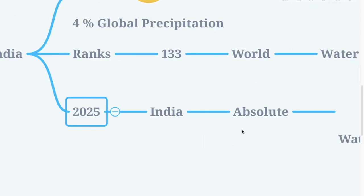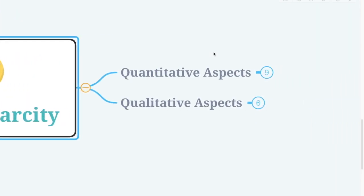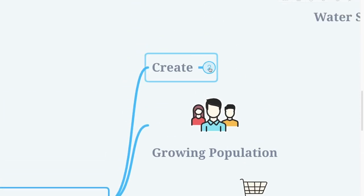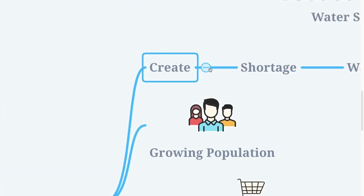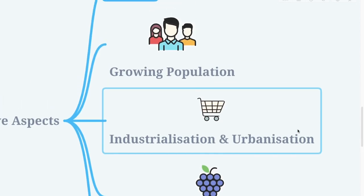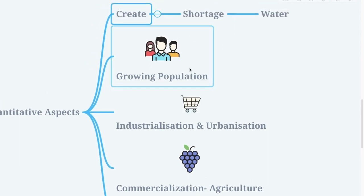Let's talk about water scarcity. Water scarcity has two parts: quantitative aspects and qualitative aspects. The quantitative aspect refers to what creates a shortage of water. The first point is growing population — we know that population is increasing day by day. More population means more food is required, which means more agricultural activities, and more agricultural activities means more requirement of water.